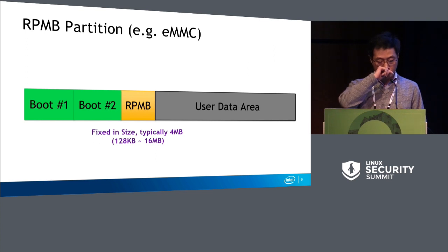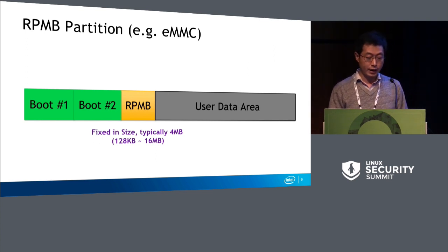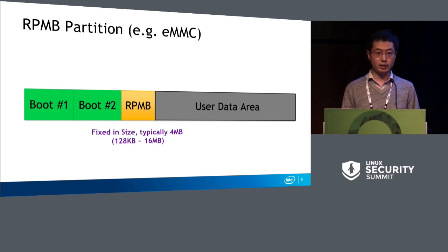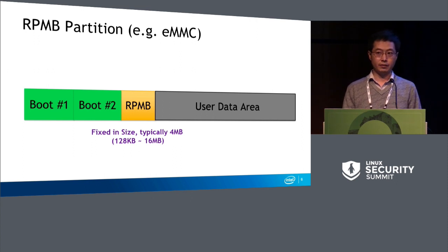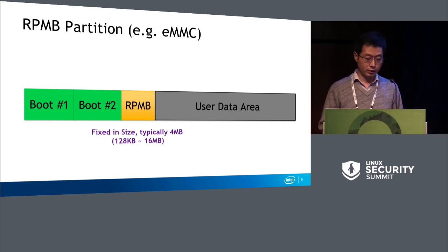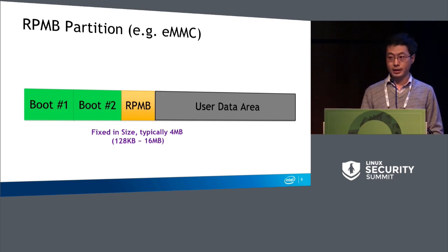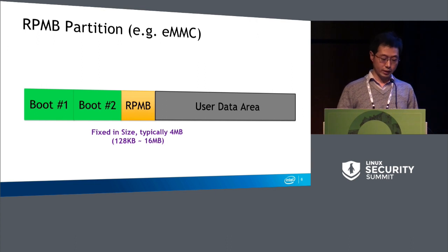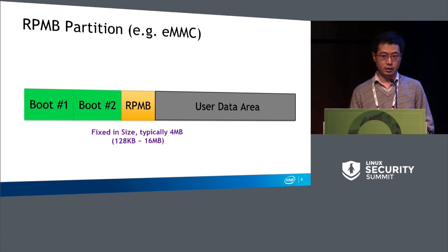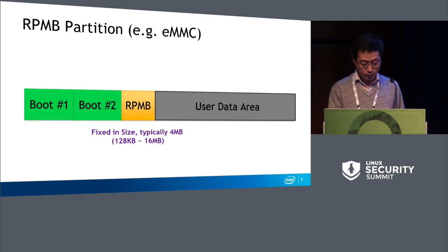Let's take eMMC as an example. If you have eMMC, there is a small partition called RPMB, and it's a special partition. You cannot increase or decrease this size — the eMMC device vendor fixes it at manufacturing time. Typically it is only 2 megabytes or 4 megabytes — pretty small. According to the specification it can range from 128 kilobytes to 16 megabytes, but typically on our reference platforms it's only 4 megabytes.